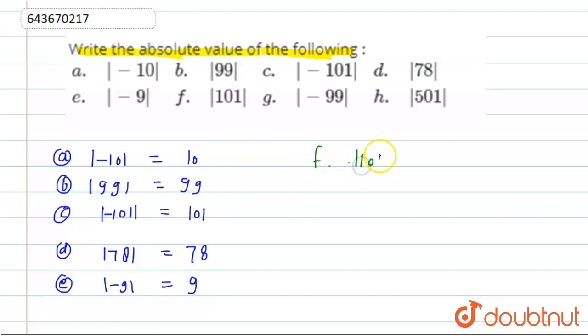Part f, 101, this is also 101. Part g, minus 99 is positive 99, and part h, 501 is equal to 501.